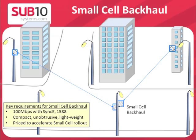The key requirements for small cell backhaul are that the links should support at least 100 Mbps full duplex and should be able to carry synchronization using SyncE and 1588. In addition, the links need to be compact, unobtrusive, and lightweight for mounting on poles and other street furniture, and priced keenly to accelerate small cell rollouts.